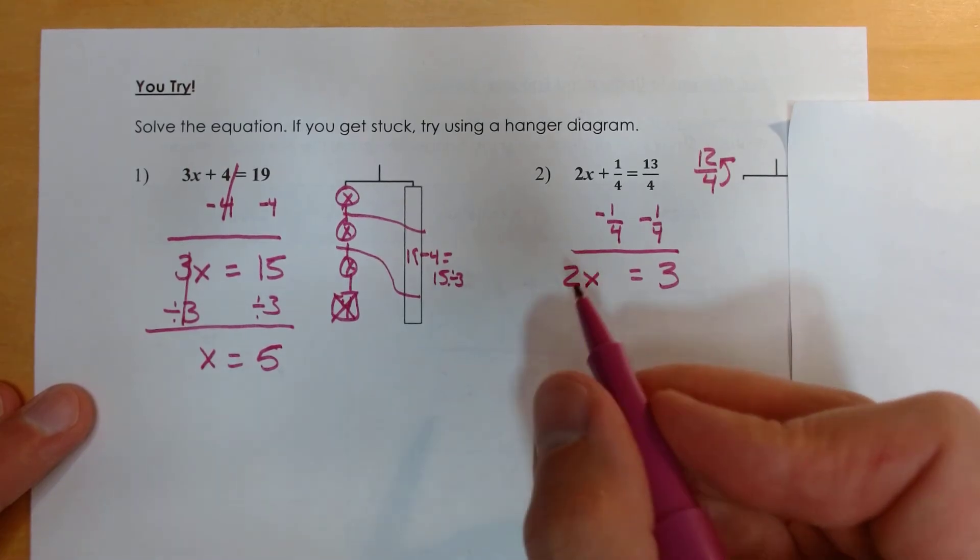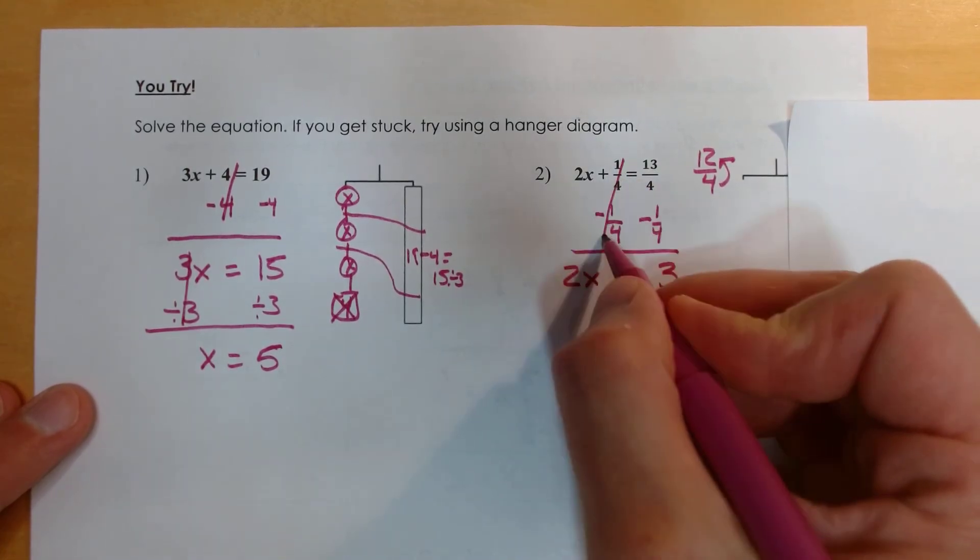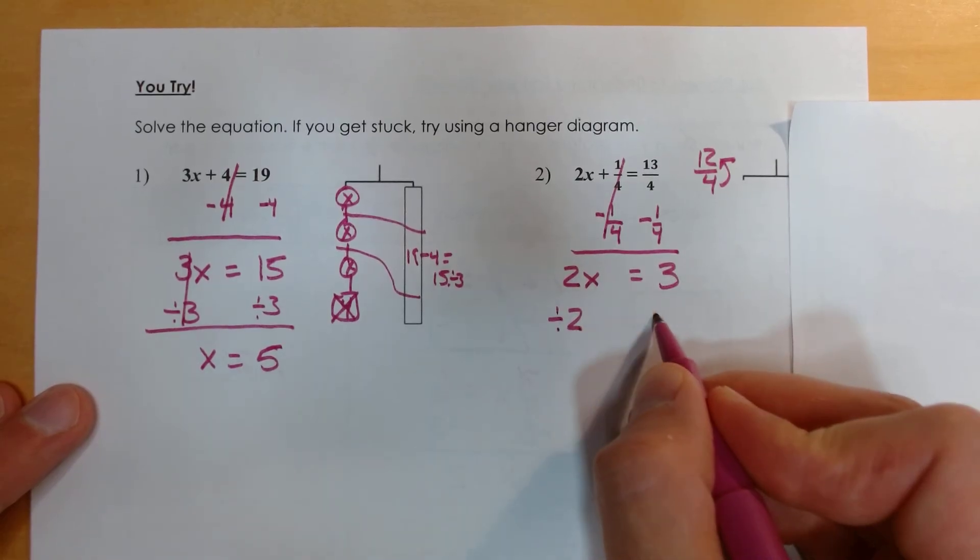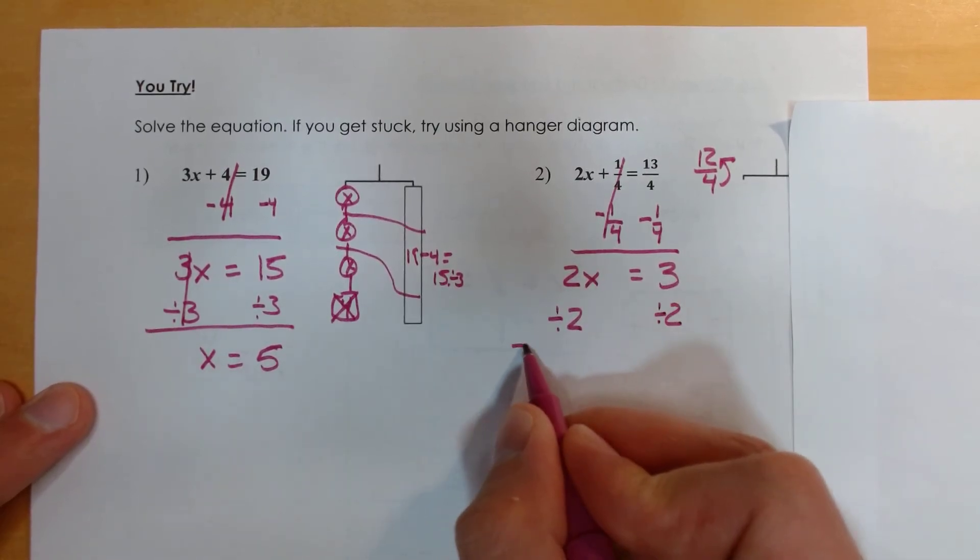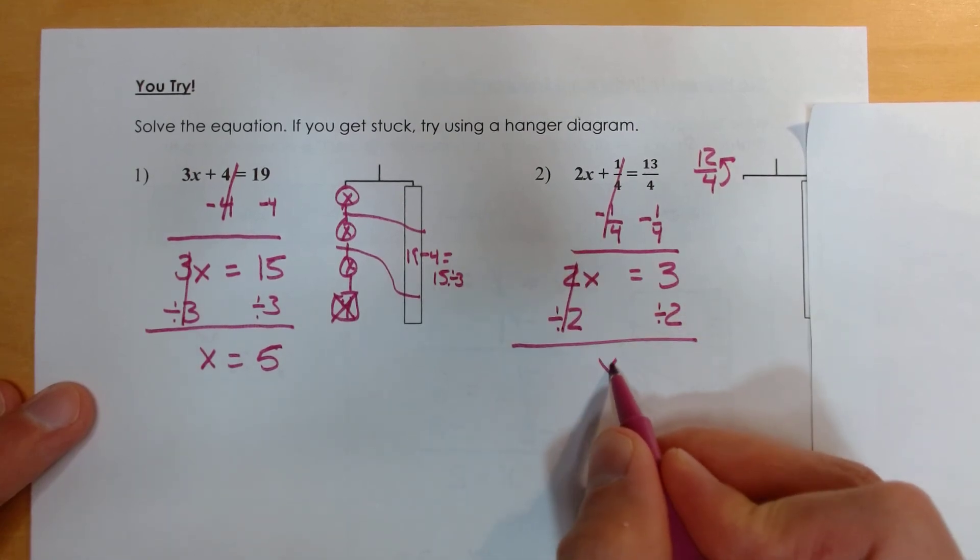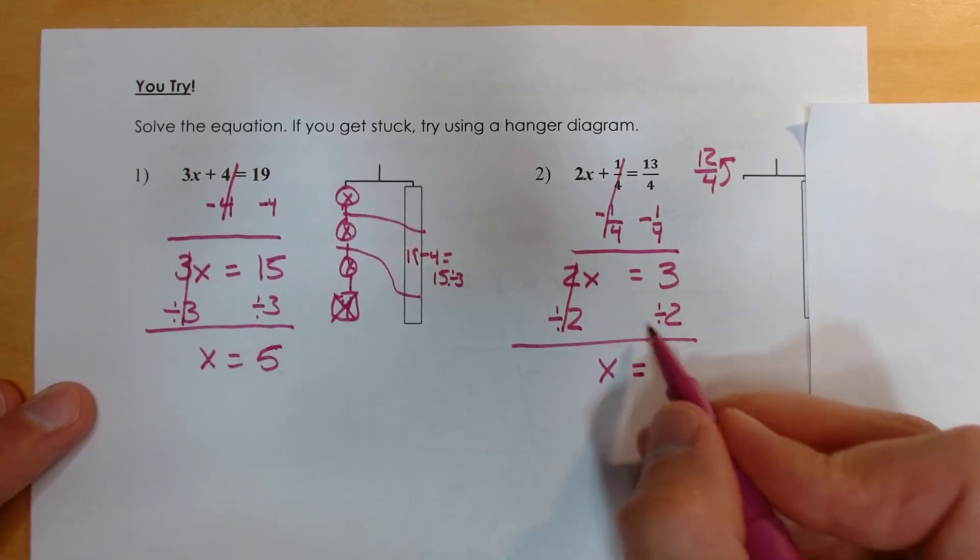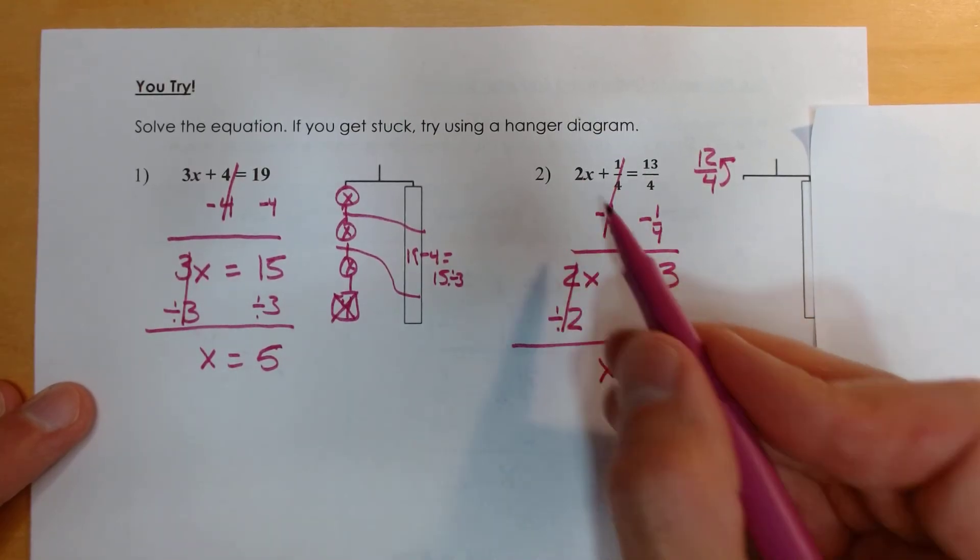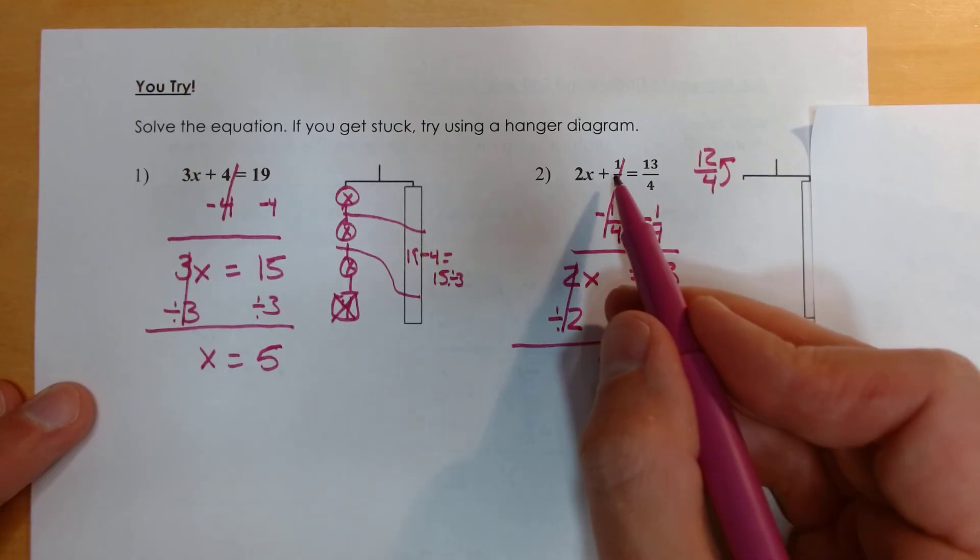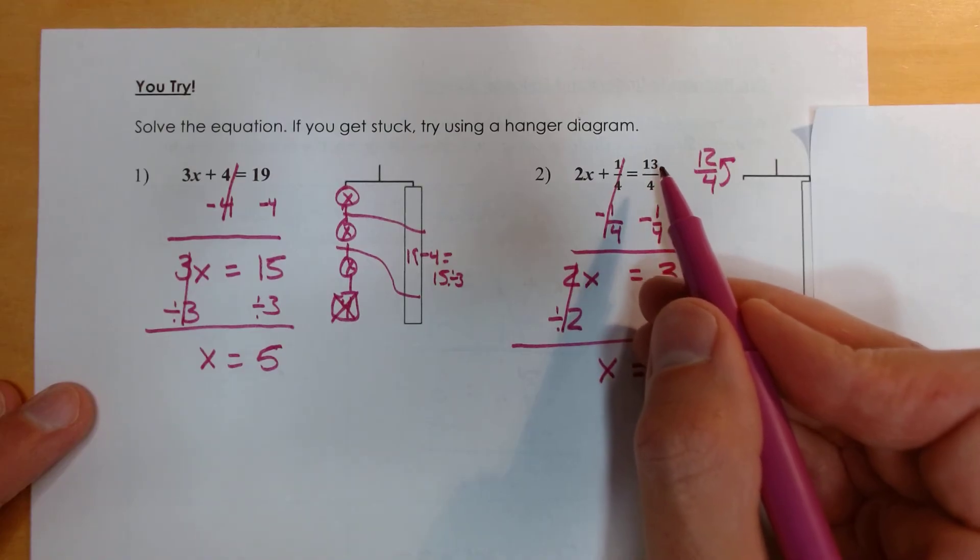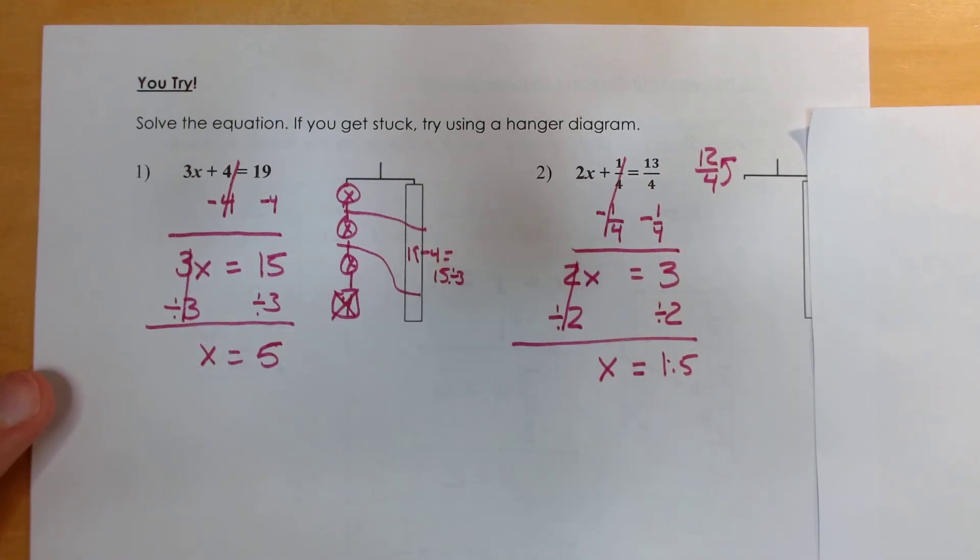All right. So now we have two of these x's. I just want to figure out what one of those x's is. So what I'm going to do is I'm going to split this into two equal groups, which means I have to split this into two equal groups. 2 divided by 2 makes 1. So I'm left with 1x equals 3 divided by 2, 1 and a half. And we check our answer. 2 times 1 and a half is 3. Plus 1 is 3 and 1 fourth. Let's check it over here. This is improper. 4 goes into 13 three times. We'd have 1 left over. So 3 and 1 fourth.